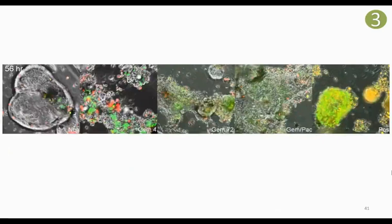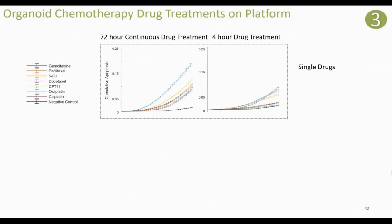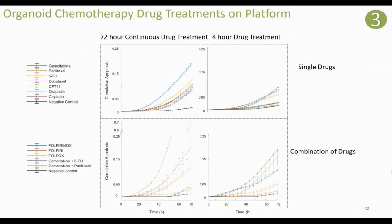Here is a video example with phase contrast, green apoptosis, and red cellular death all overlaid — going from no drug to the strongest drug from left to right. With all these images and terabytes of data, we developed a way to analyze the image data. Here's the apoptosis data quantified for single drugs and combination drugs — 72-hour continuous treatment on the left, four-hour treatment on the right. As expected, the combination of drugs was more effective than single drugs, and the 72-hour treatment was overall more effective than the four-hour drug treatment.